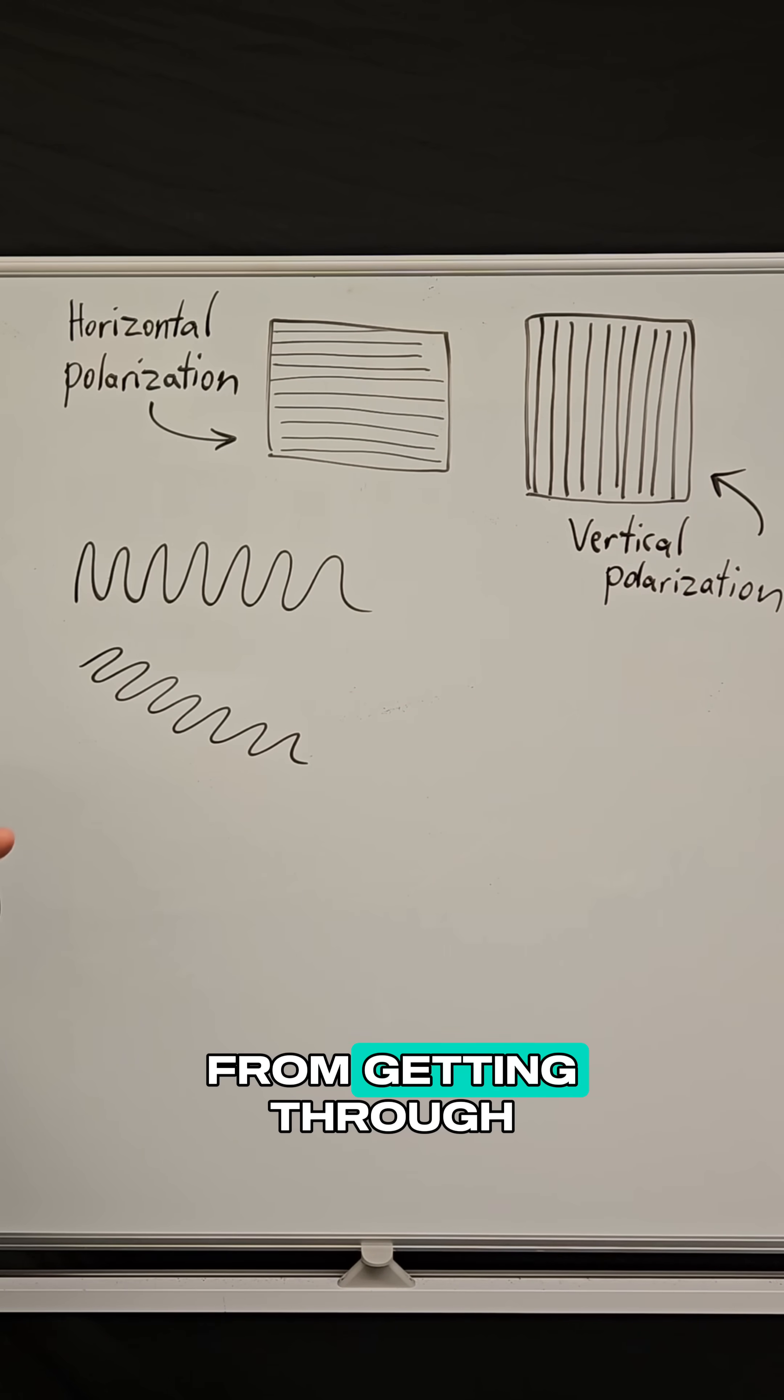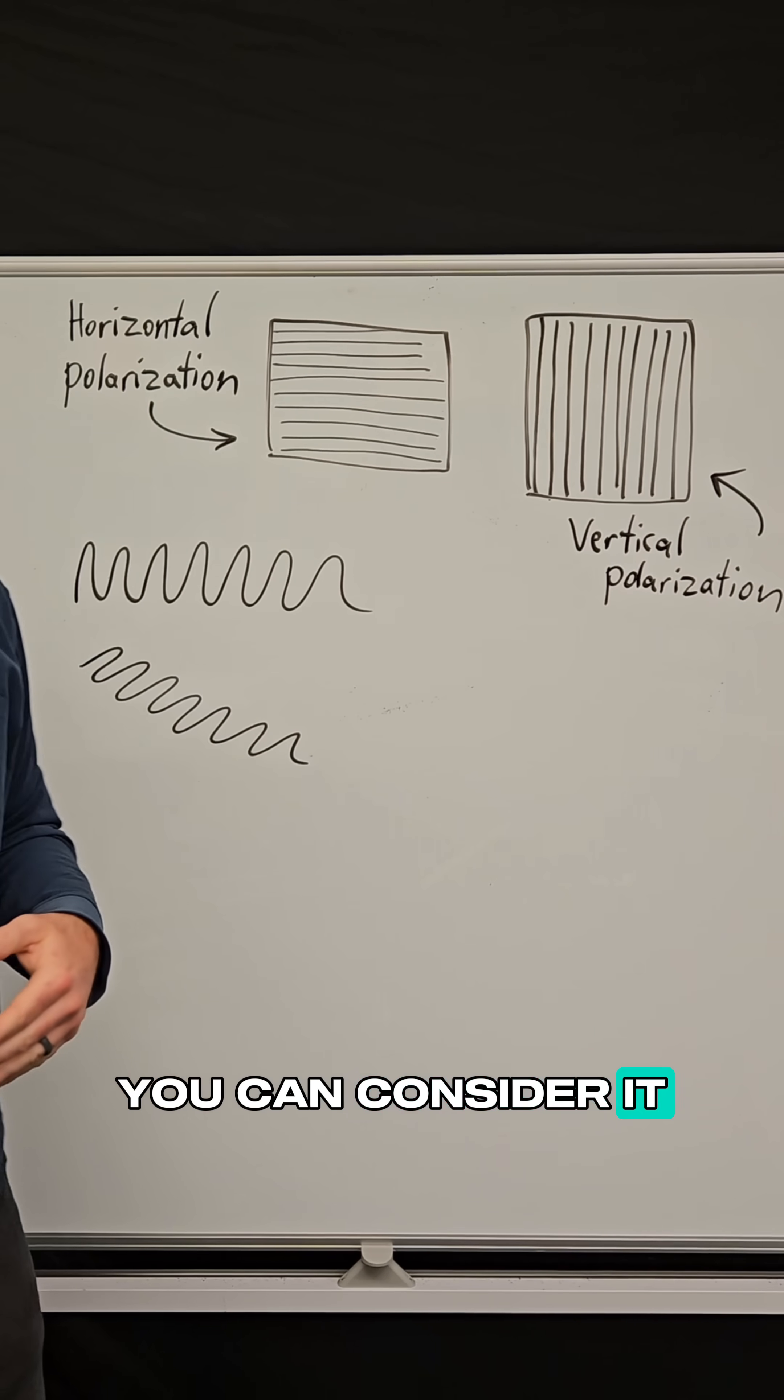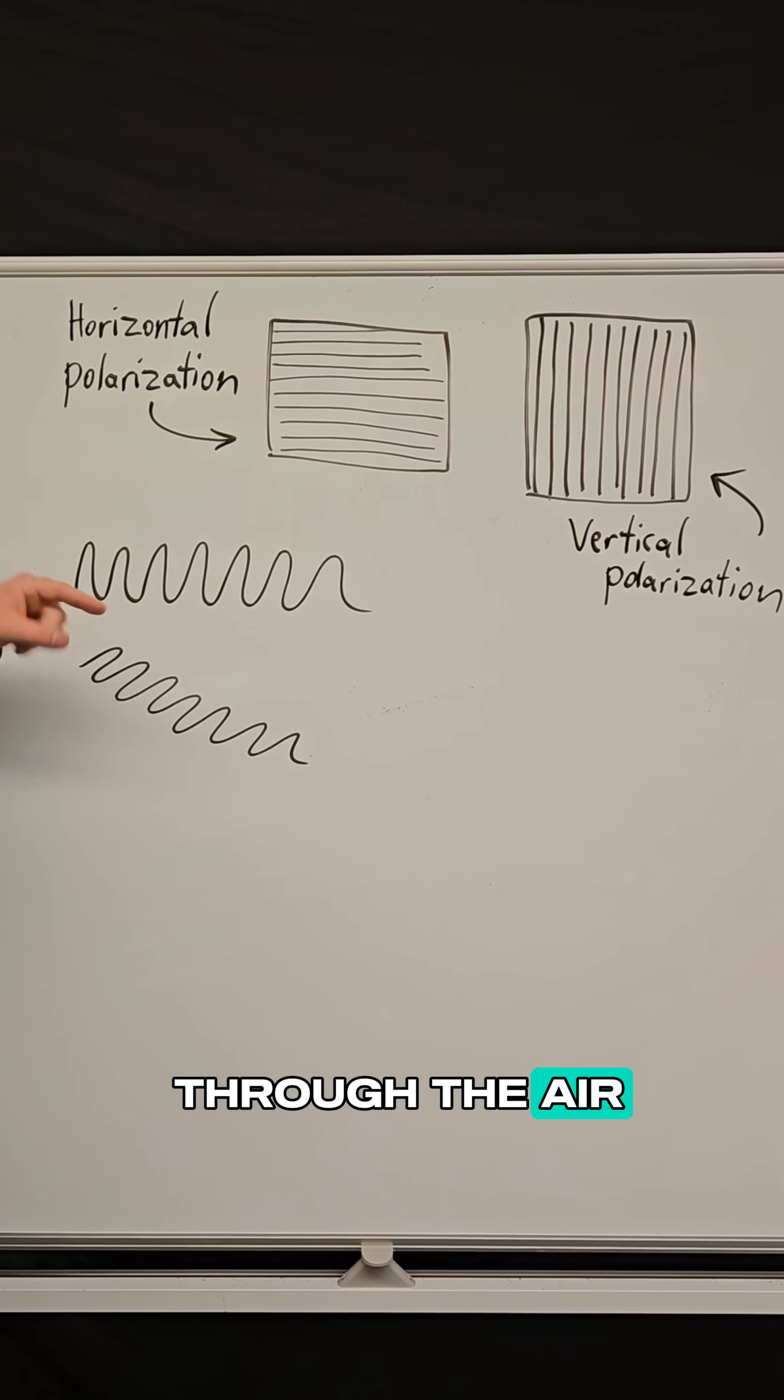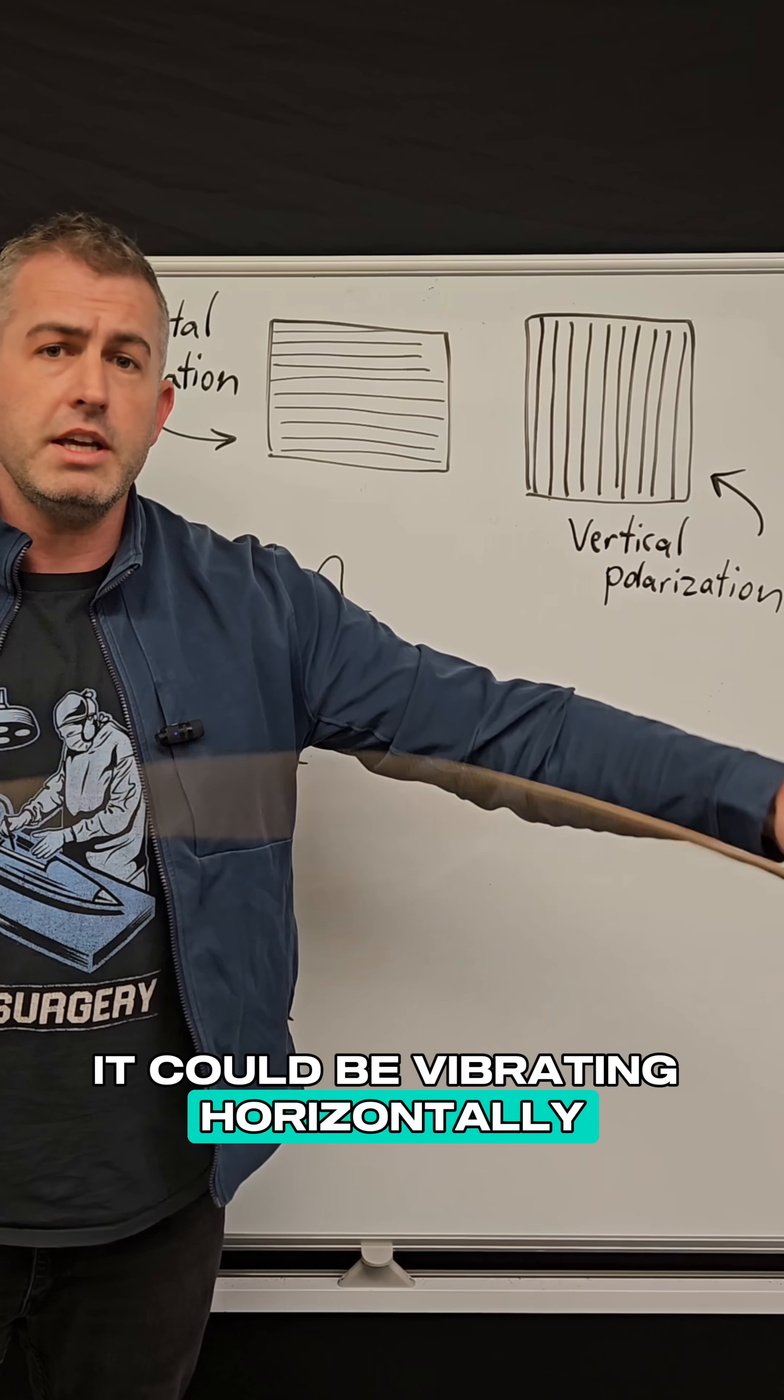Light is actually a wave. You can consider it to be an electromagnetic wave. So as it's traveling through the air, think about this rope here. It could be vibrating horizontally, it could be vibrating vertically.